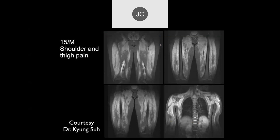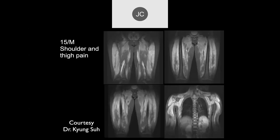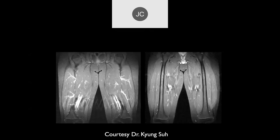This is a 15-year-old male with shoulder and thigh pain. On fluid-sensitive sequences there's diffusely increased signal throughout all the musculature. This is post-contrast in a 17-year-old with diffuse muscle pain.